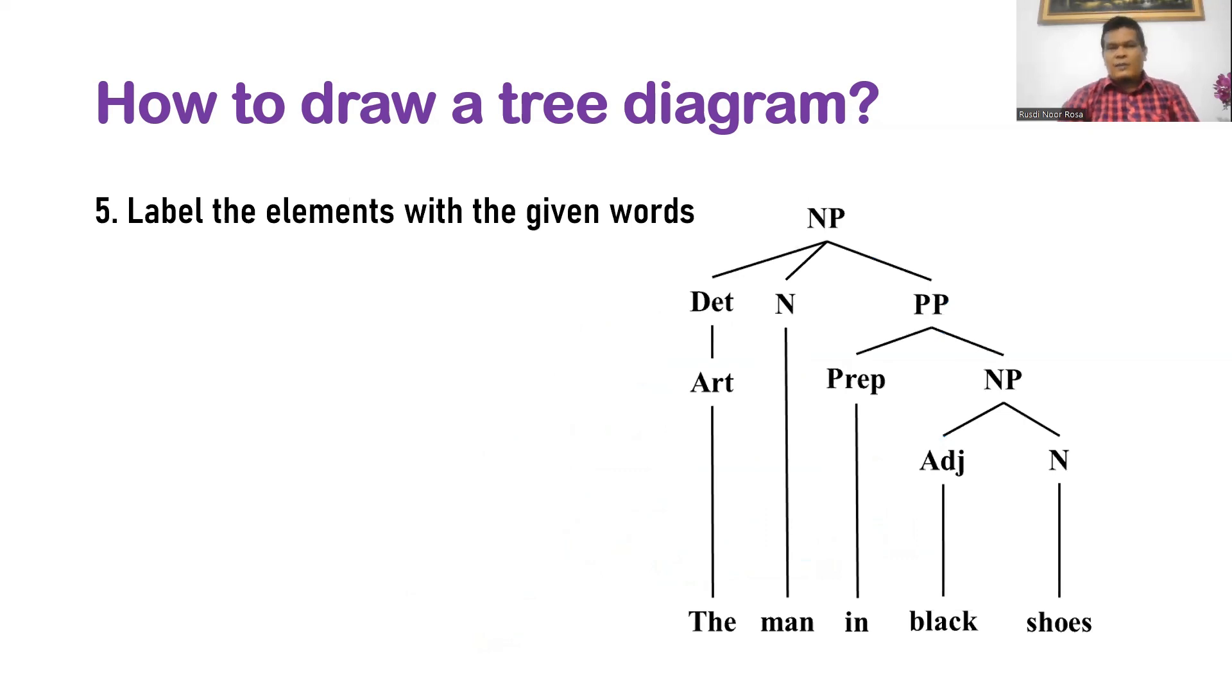Finally, label the elements with the given words. It depends on the words you analyze. I think that's all. The easy five steps on how to draw a tree diagram for sentence analysis. See you in the next video.